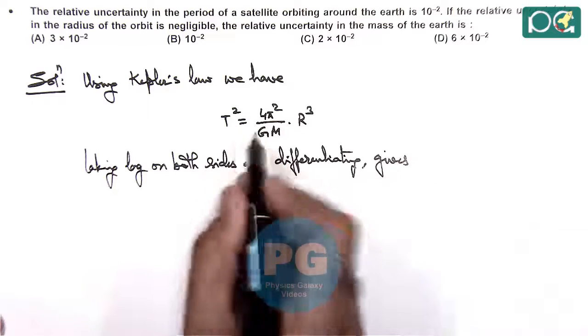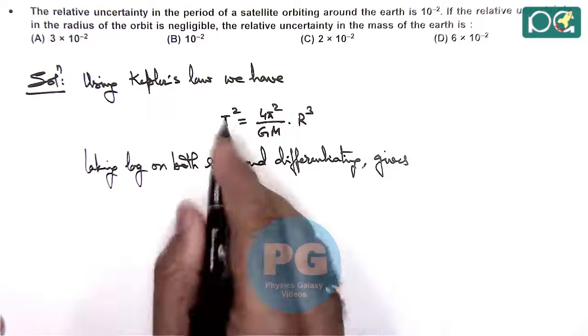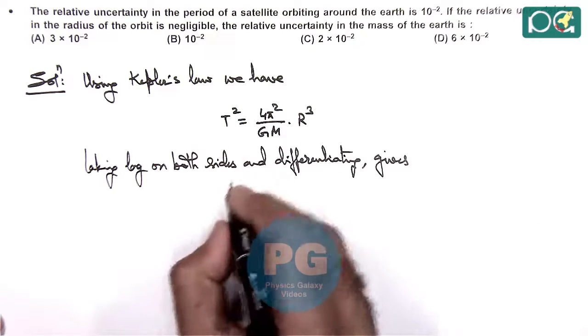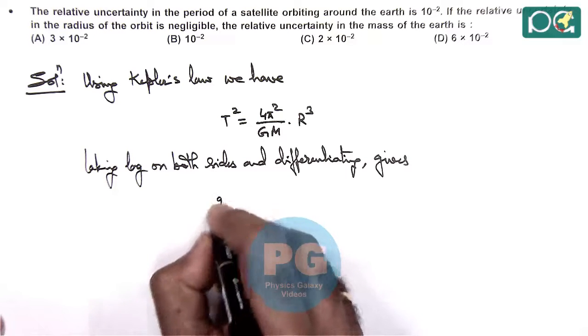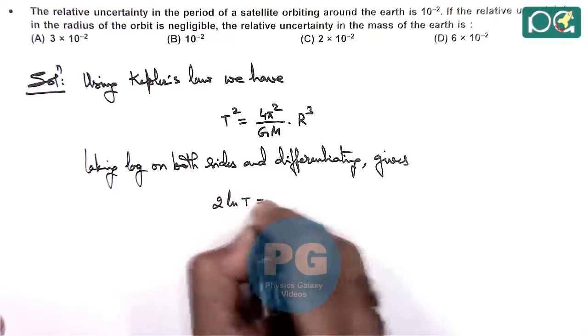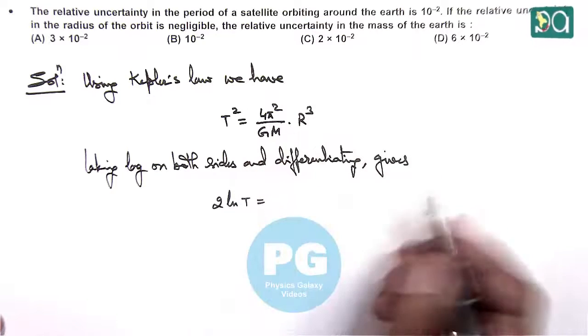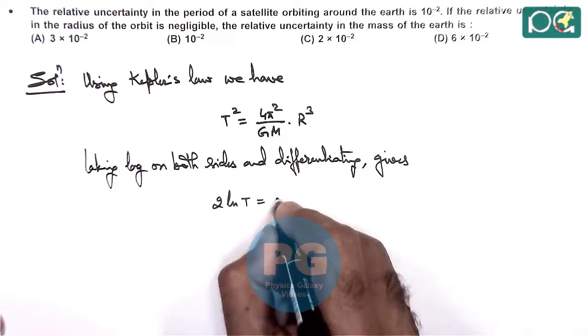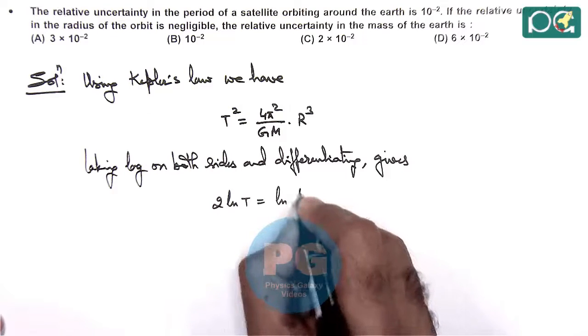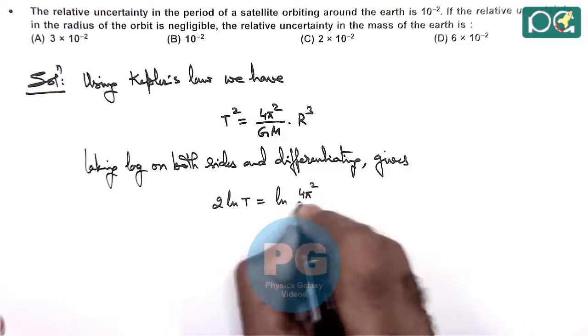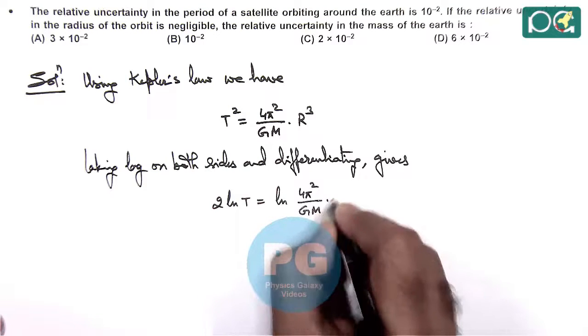This is 2 ln T is equal to 4 pi square R cube we consider as constant. So this is ln of 4 pi square by GM, times R cube.